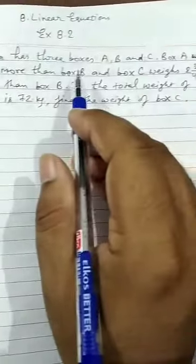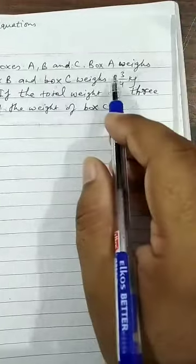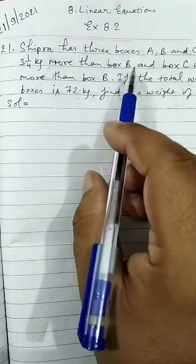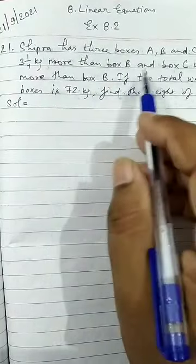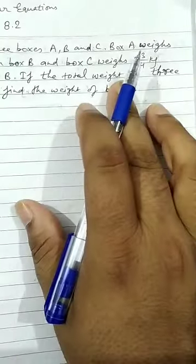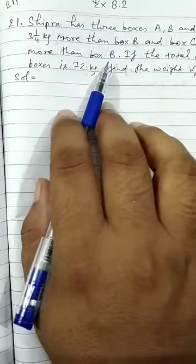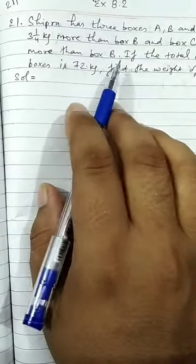Shipra has three boxes A, B and C. Box A weighs 3 and 1 upon 4 kg more than box B. And C weighs 2 and 3 upon 4 kg more than box B. So we have to take B as X.